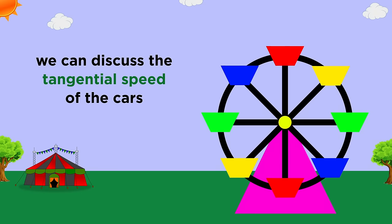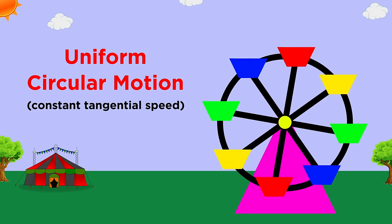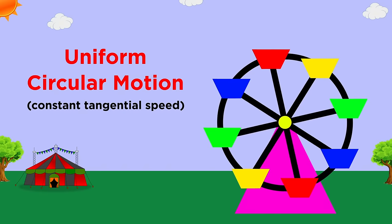To describe the speed of the car, it is common to discuss the tangential speed, because the inertia of an object causes it to try to maintain a straight line path. This is the speed of the car along the tangent line at a particular instant. If this tangential speed is constant, we will call this uniform circular motion.